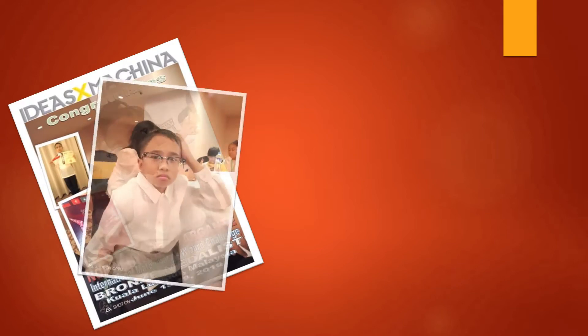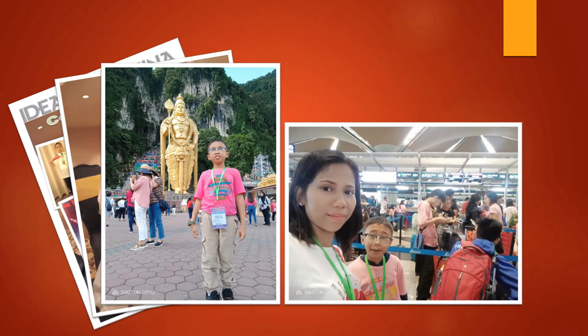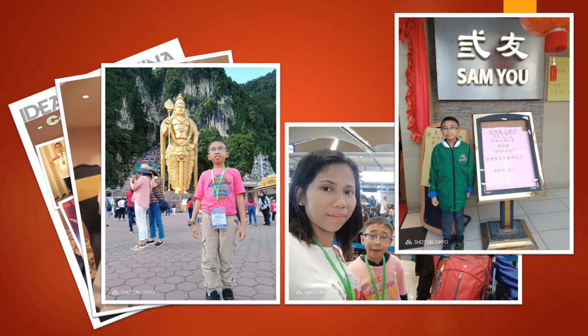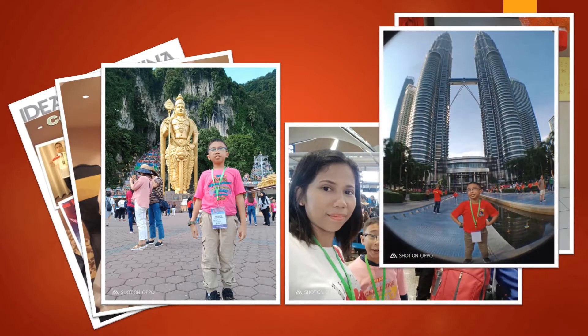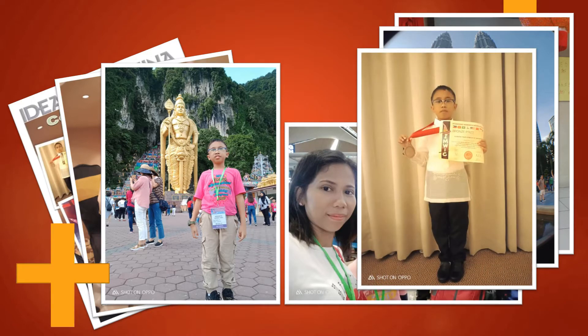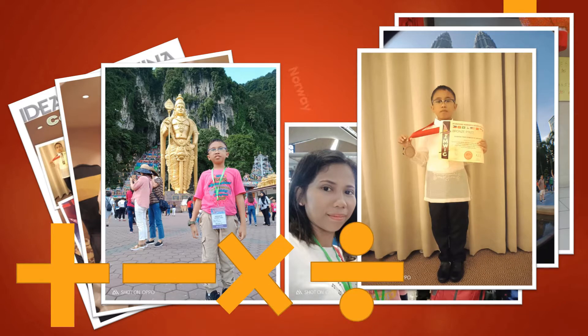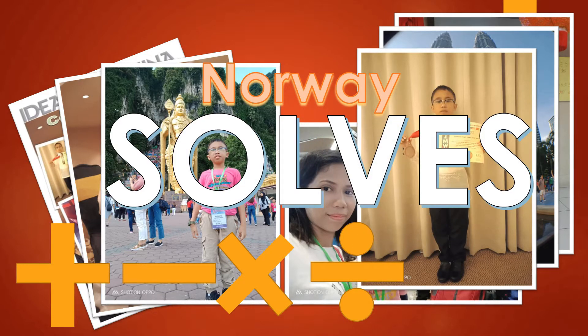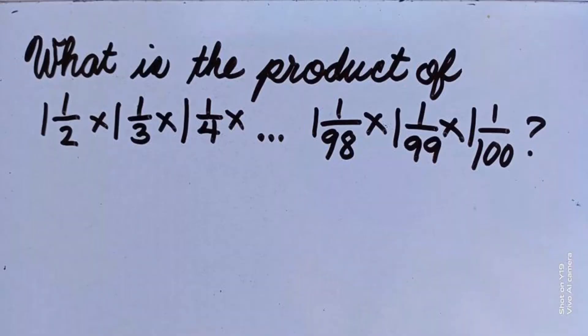Hello, guys. This is our problem for today. What is the product of 1 and 1 half times 1 and 1 third times 1 and 1 fourth, until times 1 and 1 over 100?